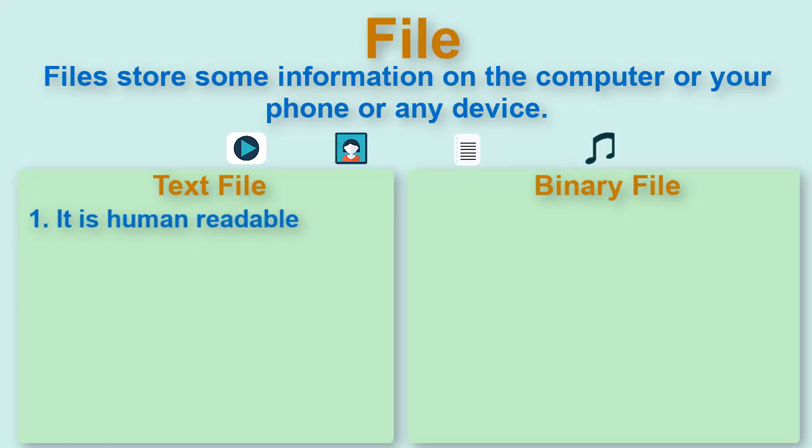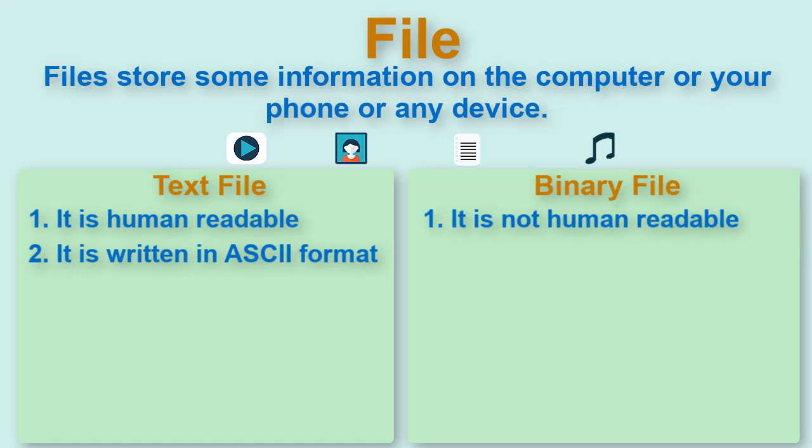So first question is what is the difference between them? Text file is human readable as it is written in ASCII format while binary file is not human readable as it is written in the format of 0s and 1s.